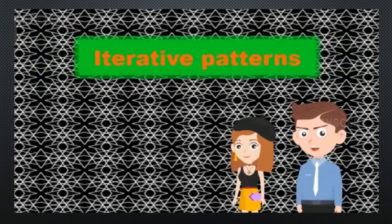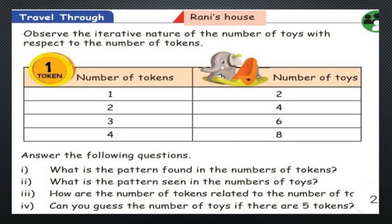Let's see about iterative patterns. This pattern is a repetition of a sequence in many ways. Let's travel through with an illustration — Rani's house. Observe the interactive nature of the number of toys with respect to the number of tokens. The number of tokens is 1, 2, 3, 4. For token 1 the number of toys is 2, token 2 gives 4, token 3 gives 6, and token 4 gives 8.